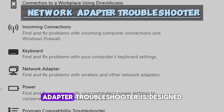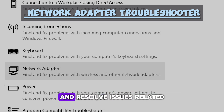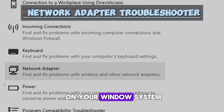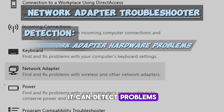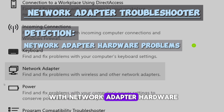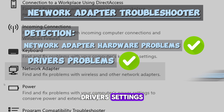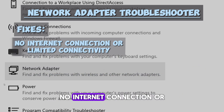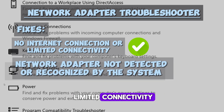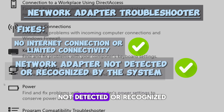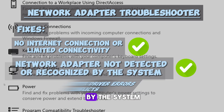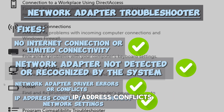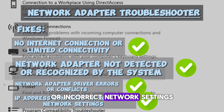The Network Adapter troubleshooter is designed to diagnose and resolve issues related to network adapters and network connectivity on your Windows system. It can detect problems with network adapter hardware, drivers, settings, and configuration. Common issues it addresses include no internet connection or limited connectivity, network adapter not detected or recognized, network adapter driver errors or conflicts, and IP address conflicts or incorrect network settings.